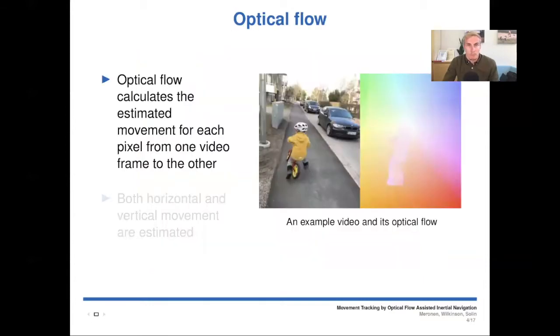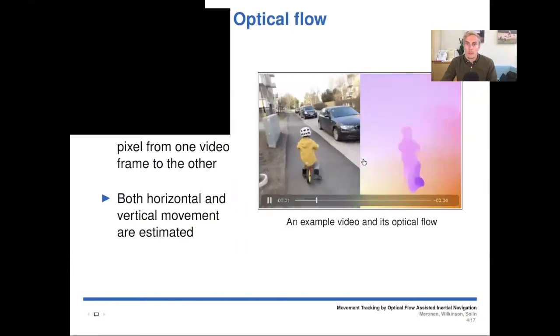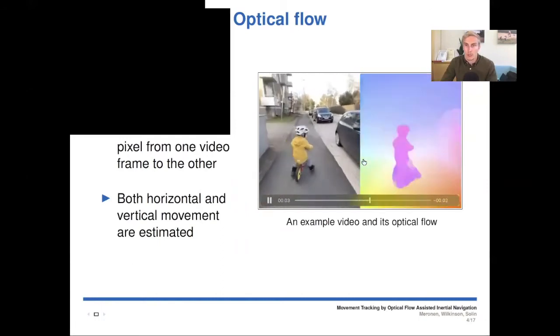Then about optical flow. Optical flow calculates the estimated movement for each pixel from one video frame to the other. To say that this is a dense approach means that for every pixel the optical flow is calculated. This helps to use visual cues and global consistency of the image. Both horizontal and vertical movements are estimated. Here's an example video and its corresponding optical flow.